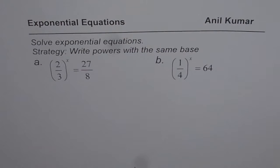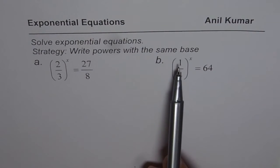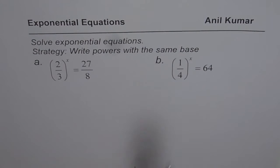Here we will apply the strategy of making same base on both sides. We have two practice questions for you. The first one is 2 over 3 to the power of x equals to 27 over 8, and the other one is 1 over 4 to the power of x equals to 64.